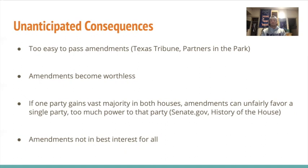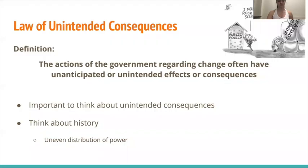Another major consequence is that the ease of ratification can give too much power to one political party. If one party holds a strong majority in either the House or the Senate, they can basically pass whatever amendments they please. In the 40th Congress, Republicans held a 173 to 47 majority in the House, meaning they could pass any amendment and send it to ratification with a supermajority already. Voters still have to vote on it and gain a majority to ratify, but it's much easier than the three-fourths state ratification process now. This can also cause amendments that are not good for the population as a whole to get ratified, since people make mistakes when voting and only a simple majority is needed.